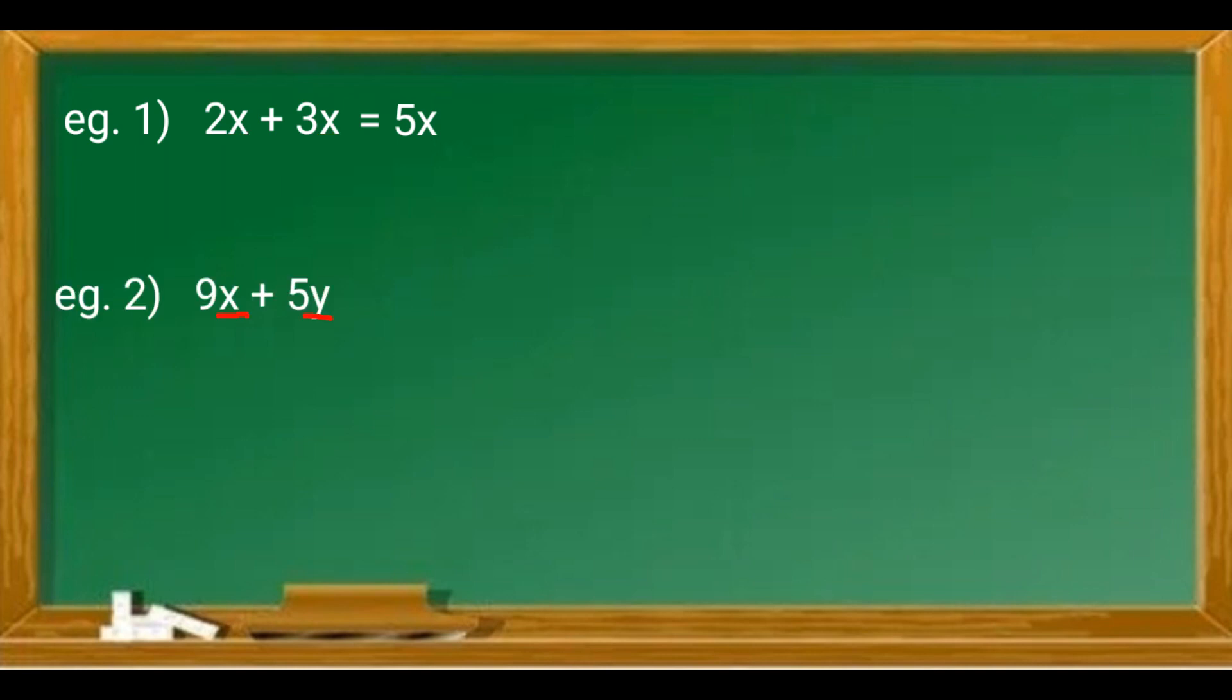Example 2: 9x + 5y. The variables are different, so it cannot be simplified any further.